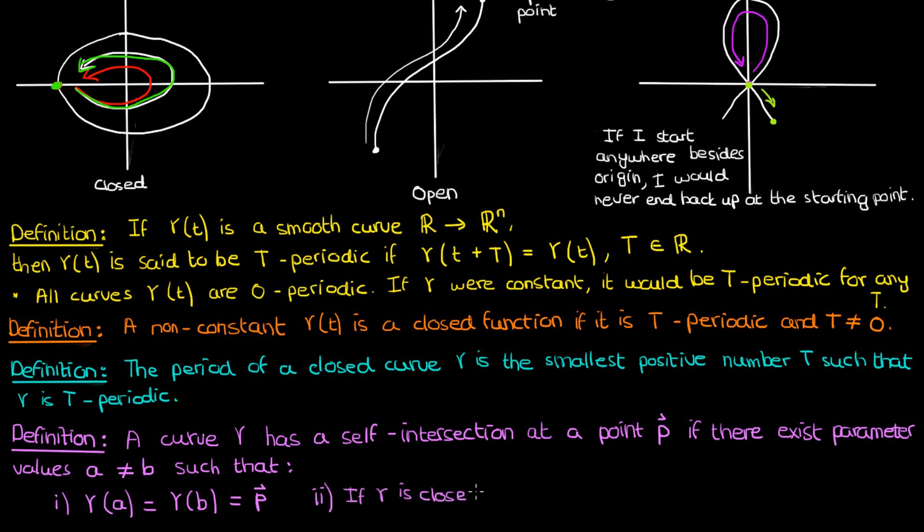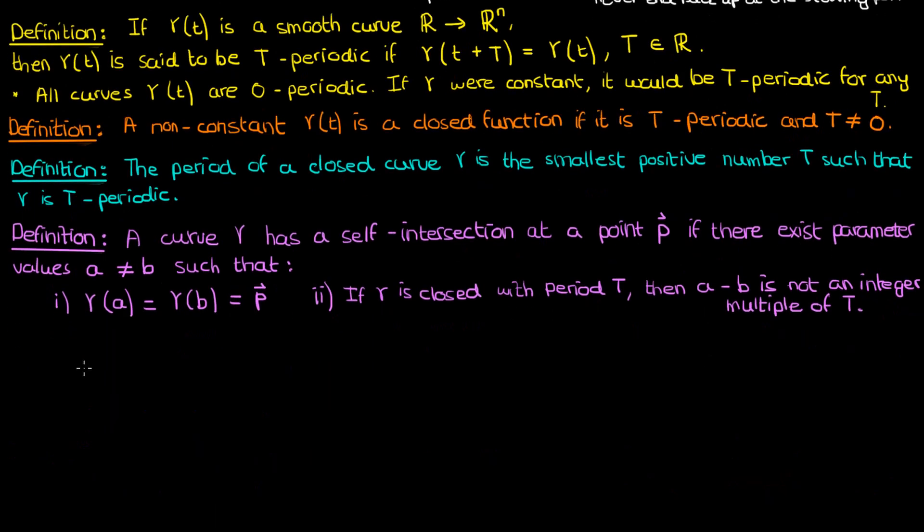The second condition is that if gamma happens to be a periodic function, the difference between the parameter values at which the self-intersection occurs cannot be an integer multiple of the period capital T. Let me illustrate what this means.